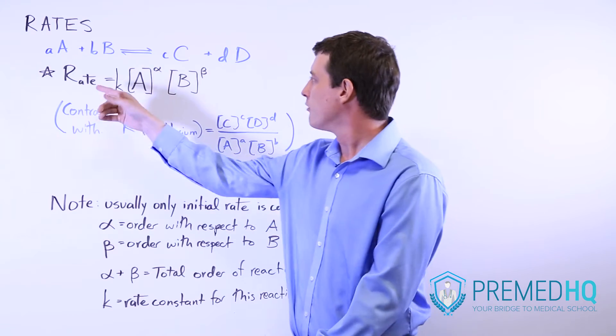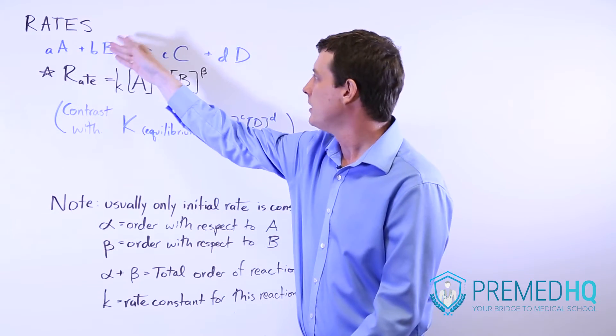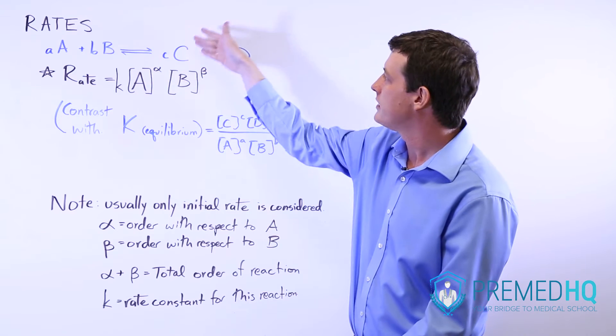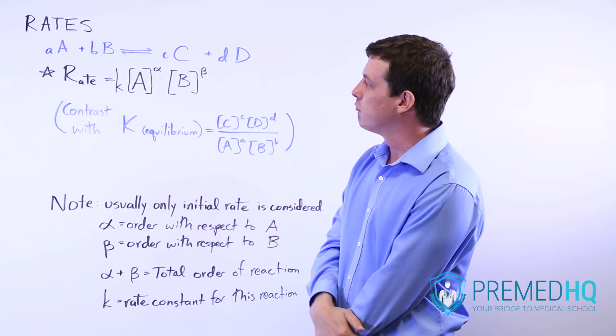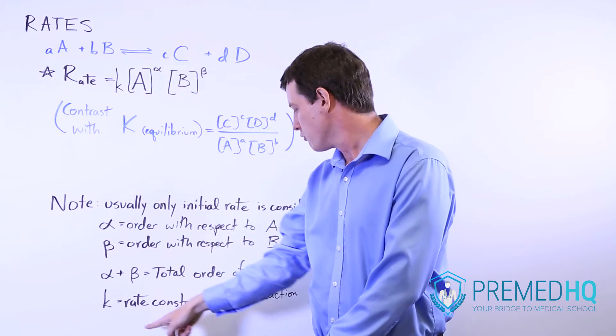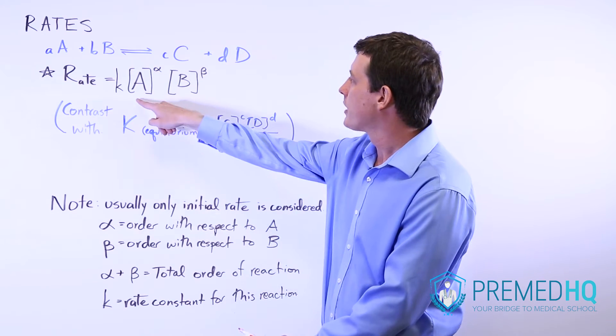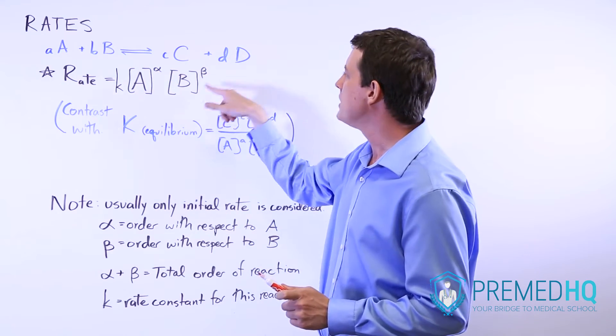The first thing you'll notice about rates is that for this generic reaction, A units of A plus B of B turns into C of C and D of D, the rate law is written as lowercase k, which is your rate constant for this reaction, times A to a power alpha and times B to a power beta.